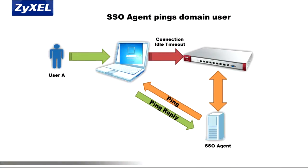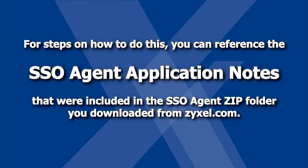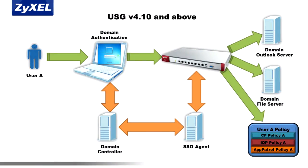One final step is to allow ICMP traffic from the SSO Agent to be received by computers on the domain so they can return a ping response. This allows the SSO Agent to help the USG determine whether a host is still on the network when the idle timeout value is reached. Although you can make this Windows firewall exception on every individual machine, you'll most likely want to push this security policy from your AD server. For steps on how to do this, reference the SSO Agent application notes included in the SSO Agent zip folder downloaded from Zyxel.com. With these settings in place, users should be able to authenticate against the USG's security policies when they initially log into their computers on the local network domain and require no additional login.